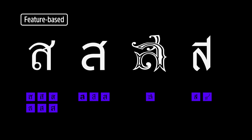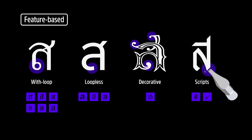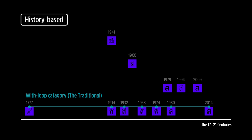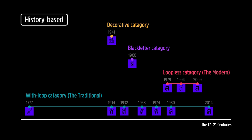The first perspective is Feature Bits. We focus on type anatomy. Under Feature Bits, there are four subgroups. The second perspective is History Bits. We focus on the timeline. If we look at the date of first cast or release, we will also obtain four subgroups. The green line here is the With Loop Categories. The red one is the Loopless Categories. The yellow line is the Decorative Categories. And the last line, the purple line, is the Black Letter Categories.